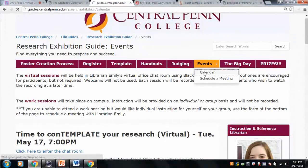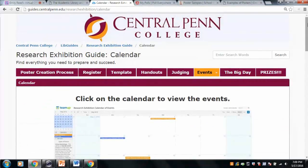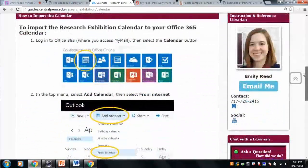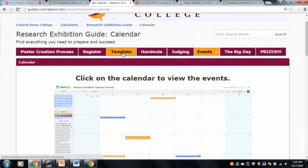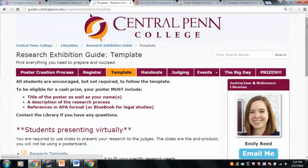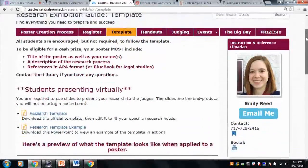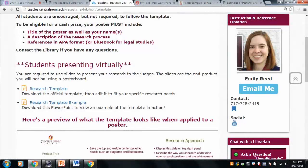We also have a calendar tab right here. You can integrate this into your Office 365 calendar if you use that. Instructions on how to do that are down here. Today we're talking about using the template, applying your research to the template. On this template tab, there are two downloadable PowerPoints I want to show you. The research template is a PowerPoint template that you can use. It's guidelines for how you can display your research on the poster, the kinds of things you're looking for, the kind of information you should have on your poster.